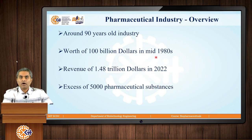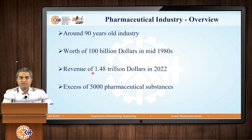When we talk about biopharmaceuticals, firstly let us understand the pharmaceutical industry. This industry is 90 years old. It was having the worth of 100 billion dollars in the mid 1980s. In 2022, it was reported that the revenue at world level was 1.48 trillion dollars. Currently, the pharmaceutical industry has in excess of 5000 pharmaceutical substances. We call them in general language as drug molecules.